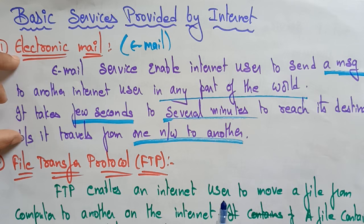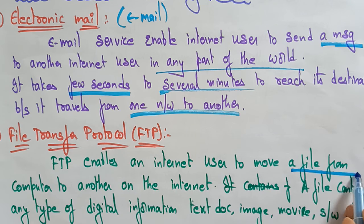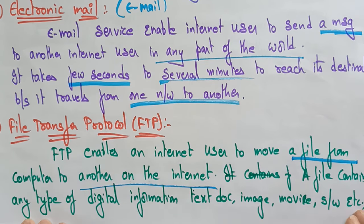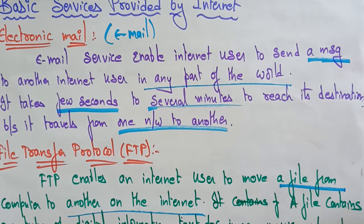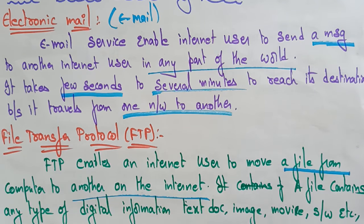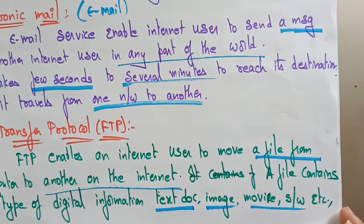Another service provided by the internet is FTP — the File Transfer Protocol. FTP enables an internet user to move a file from one computer to another on the internet. Unlike email which sends messages, FTP sends a complete file. A file can contain any type of digital information like text documents, images, movies, software, etc.